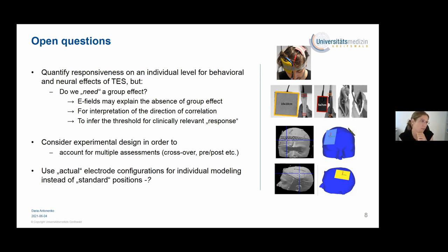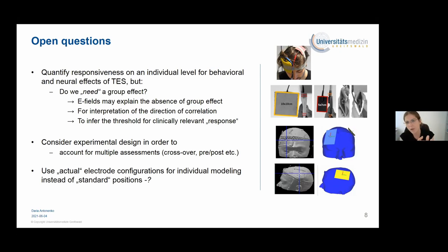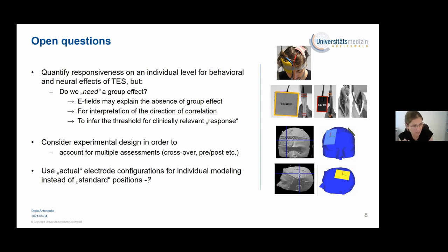For instance, in young adults we find an increase in resting state connectivity, while for older adults we find a decrease. It is also not clear yet if there is a certain threshold to achieve — such as a 5% improvement or a particular decrease in GABA in millimoles per liter — or whether we expect linear relationships with field strength. It is important to carefully reflect the experimental design to account for multiple assessments, order effects, and baseline effects, not simply correlating some difference with some E-fields.